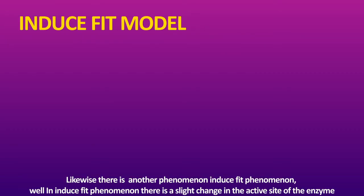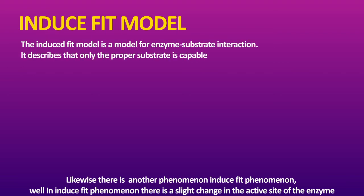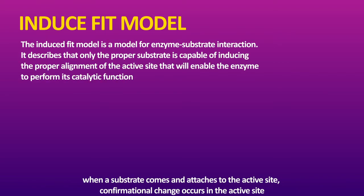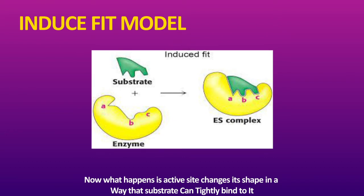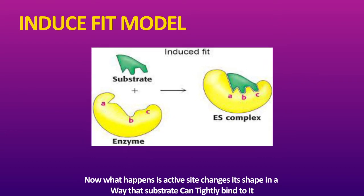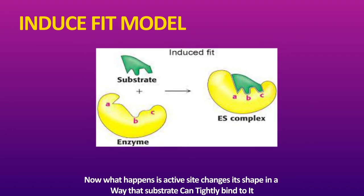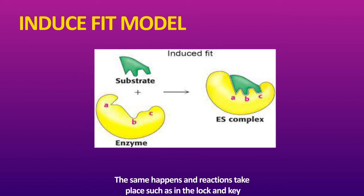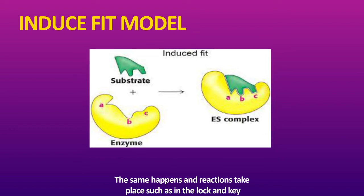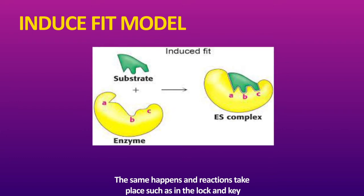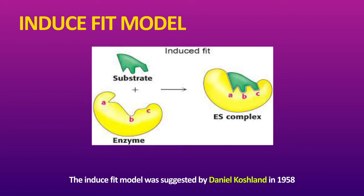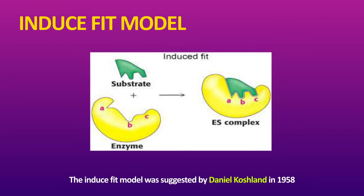Likewise, there is another phenomenon called the induced fit model. In the induced fit model, there is a slight change in the active site of the enzyme. When a substrate comes and attaches to the active site, a conformational change occurs in the active site — it changes its shape so that it can tightly fit the substrate. Reactions then take place and products are formed, just as in the lock and key. The induced fit model was suggested by Daniel Koshland in 1958.